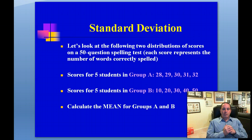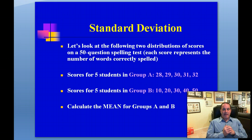In Group A the students scored as follows: 28 out of 50, 29 out of 50, 30 out of 50, 31 out of 50, and 32 out of 50. So the five students in Group A got scores of 28, 29, 30, 31, and 32.